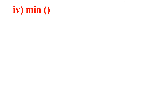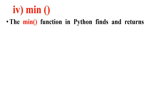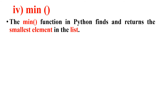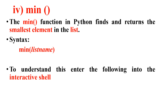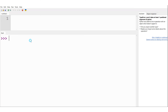Moving on, let me consider the fourth method — min. The min function in Python finds and returns the smallest element in the list. The syntax is min(list_name), where min is the keyword and list_name is the name of the defined list.